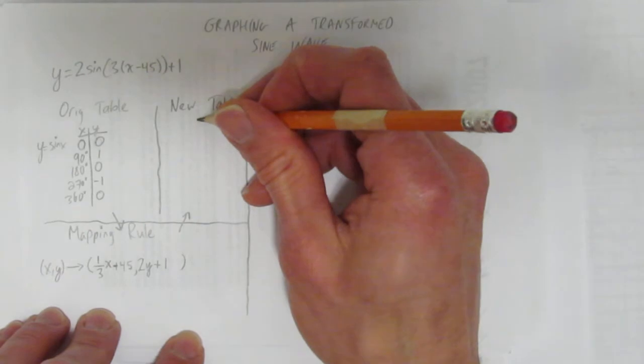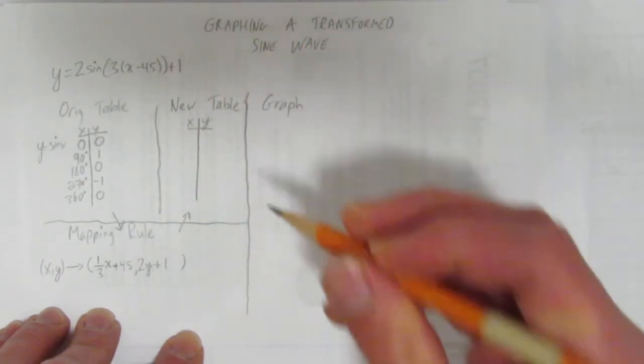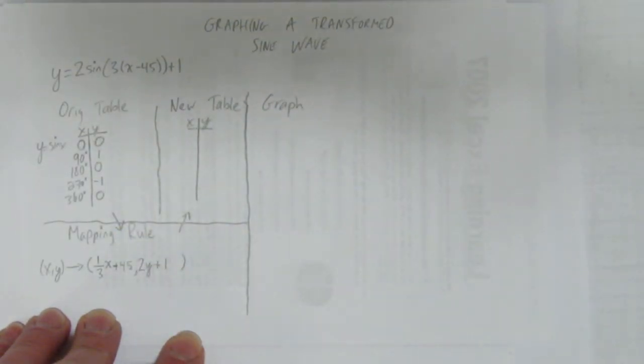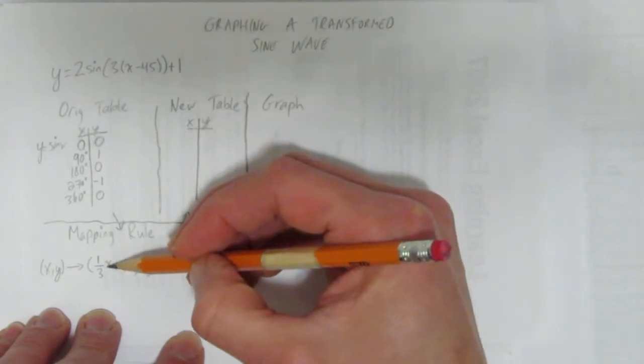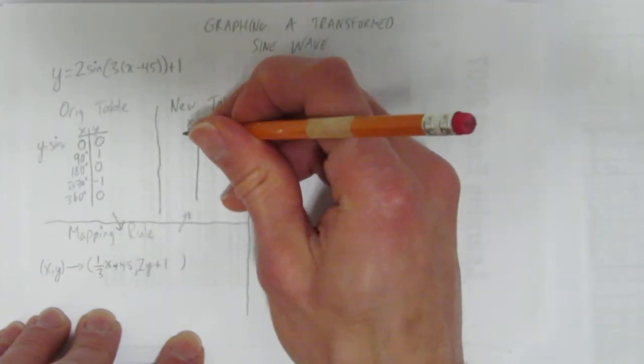Okay, let's make our new table. Our new table has an x and a y column like before, but we take all these points and transform them with the mapping rule. Let's do all the x's first. Let's take zero and do a third of zero. What's one third of zero? That's just zero. Plus 45, you get 45.